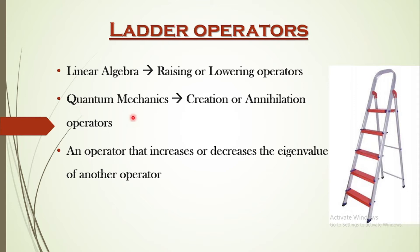According to quantum field theory, the creation operator increments the number of particles in a given state, while the corresponding annihilation operator decrements the number of particles in a given state — in such cases this operator can be called a particle number operator. To change the state of a particle, this requires using an annihilation operator to remove a particle from the initial state and a creation operator to add a particle to the final state.